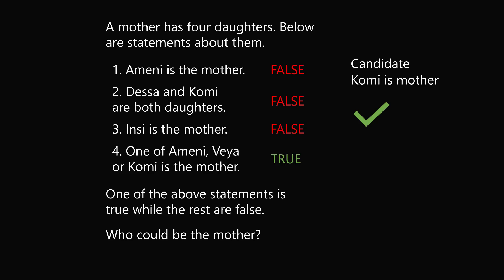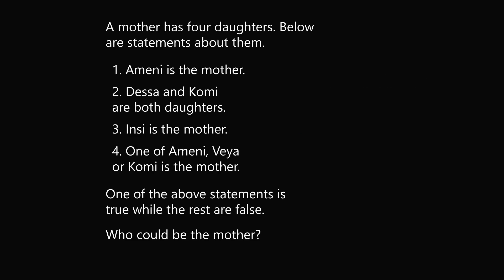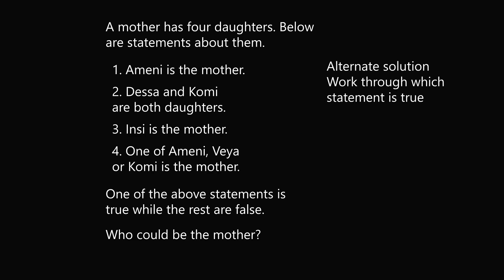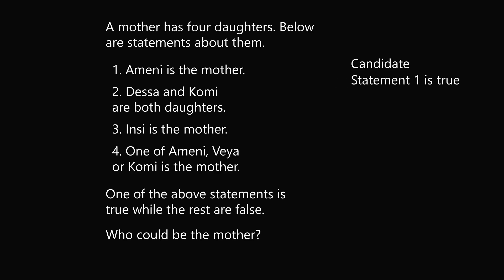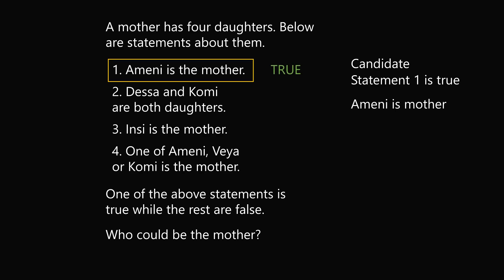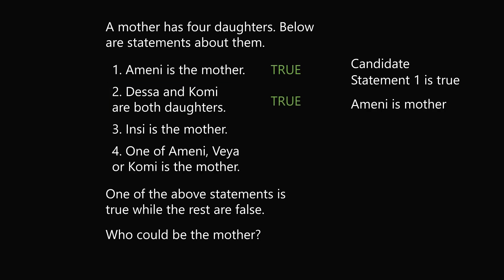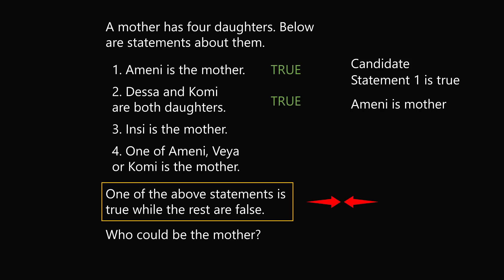In this solution, we worked through each candidate and considered the statements. But there's another way to solve this puzzle — we could work through the statements, assuming each one is true and checking for contradictions. Let's start with statement 1 being true: A-meni is the mother. Then everyone else has to be a daughter, so Dessa and Komi are both daughters, making statement 2 also true. But both statements 1 and 2 can't be true. So statement 1 cannot be the true statement.